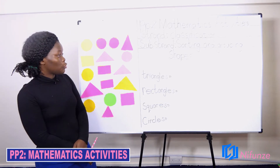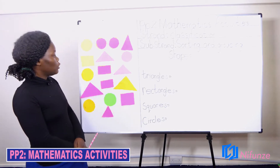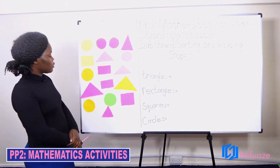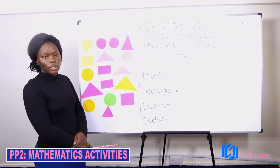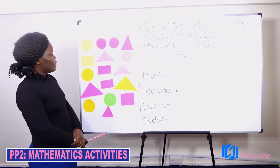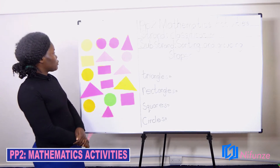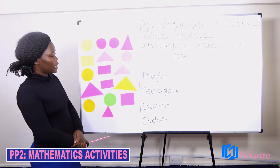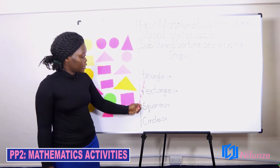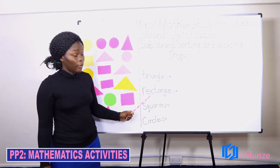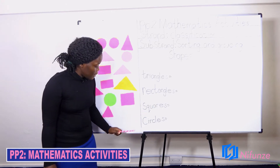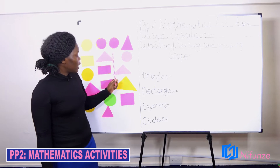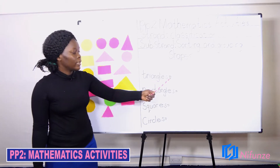Today we are going to sort out shapes. We are only going to deal with the shapes. On my board, you can see some diagrams. We have some shapes on the board and we want to sort them out. On the other side of the board, I've written the words triangle, rectangles, squares, and circles. We are going to count the number of each shape and record the number there.